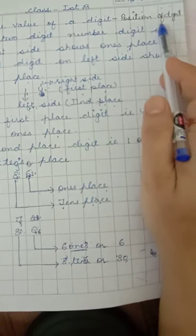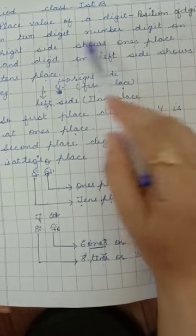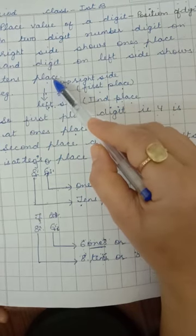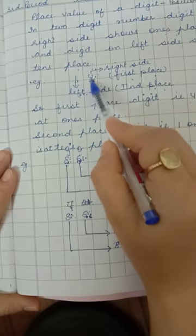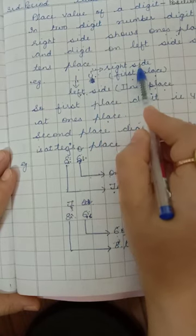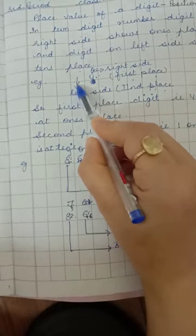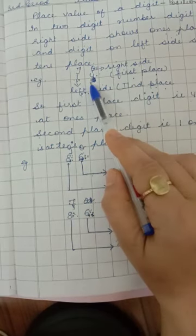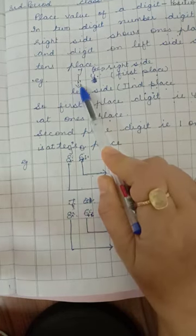The position of the digit tells us which place it comes on in a two-digit number. The digit on the right side is known as the ones place, and the digit on the left side is known as the tens place. For example, 14 is a two-digit number. In 14, 4 is on the right side, so 4's place is the ones place. And 1 is on the left side, so 1's place is the tens place.